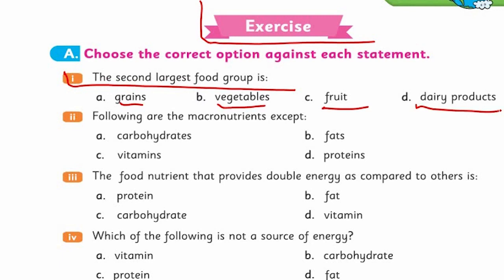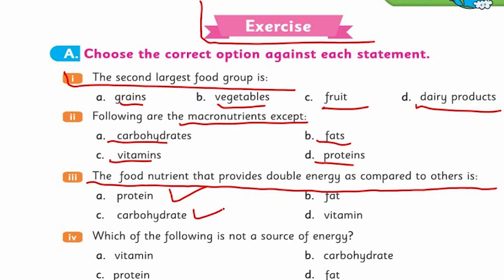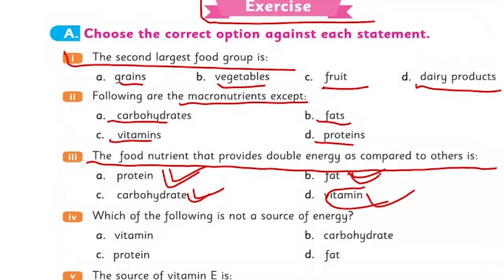Following are the macronutrients except - if you remember we have three macronutrients and four micronutrients. If you start studying you will have to know which one is macronutrient and which one is micronutrient. The food nutrient that provides double energy - protein, carbohydrate, vitamin, fats. Fat provides double energy.